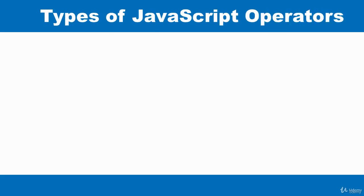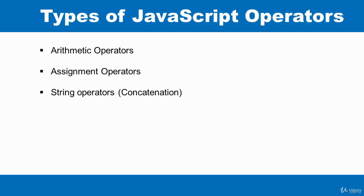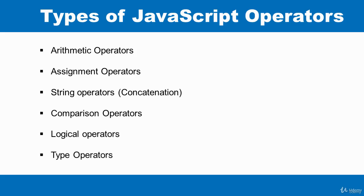There are different types of operators in JavaScript. We've got the arithmetic operators, we've got the assignment operator, we've got a string operator, sometimes called concatenation. We've got the comparison operator, we've got the logical operator and the type operators.